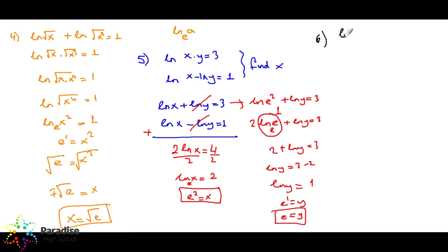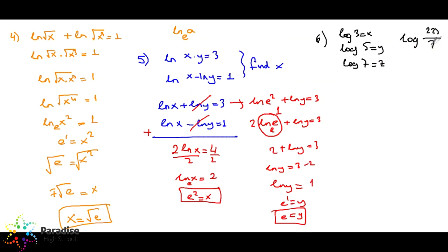Question number six: given logarithm 3 equals x, logarithm 5 equals y, and logarithm 7 equals z, write logarithm of 225 over 7 in terms of x, y, and z.